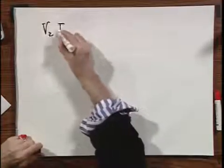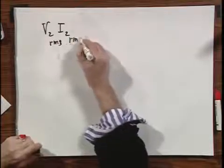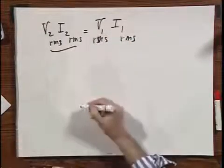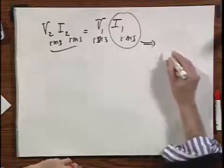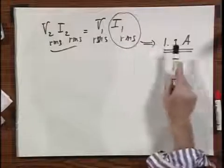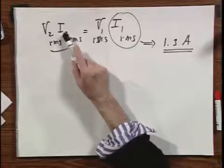For an ideal transformer, V2_RMS times I2_RMS must equal V1_RMS times I1_RMS, and this is 156 watts. So you will have no problems calculating that I1_RMS is 1.3 amperes. The voltages step up in ratio N2 over N1, but the currents step down in ratio N1 over N2. The voltages are proportional to the number of windings, but the currents are inversely proportional to the windings, in order to keep the power delivered to the primary side the same as the power to the secondary side. Notice that the current in the primary is substantially higher — 130 times higher than the current in the secondary.